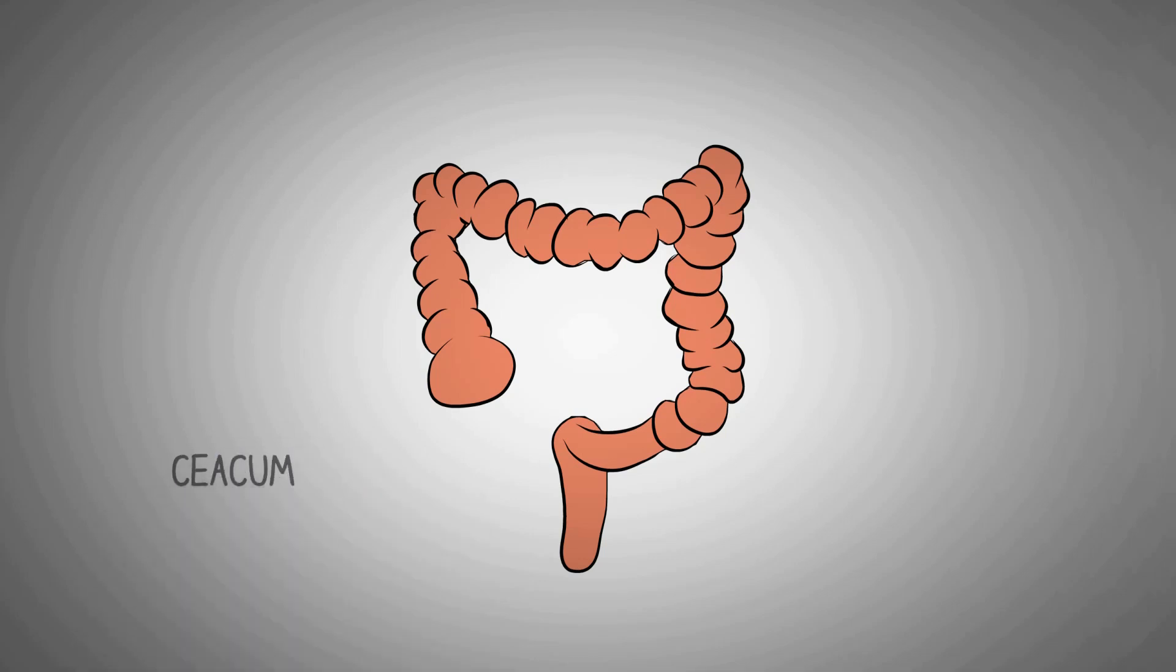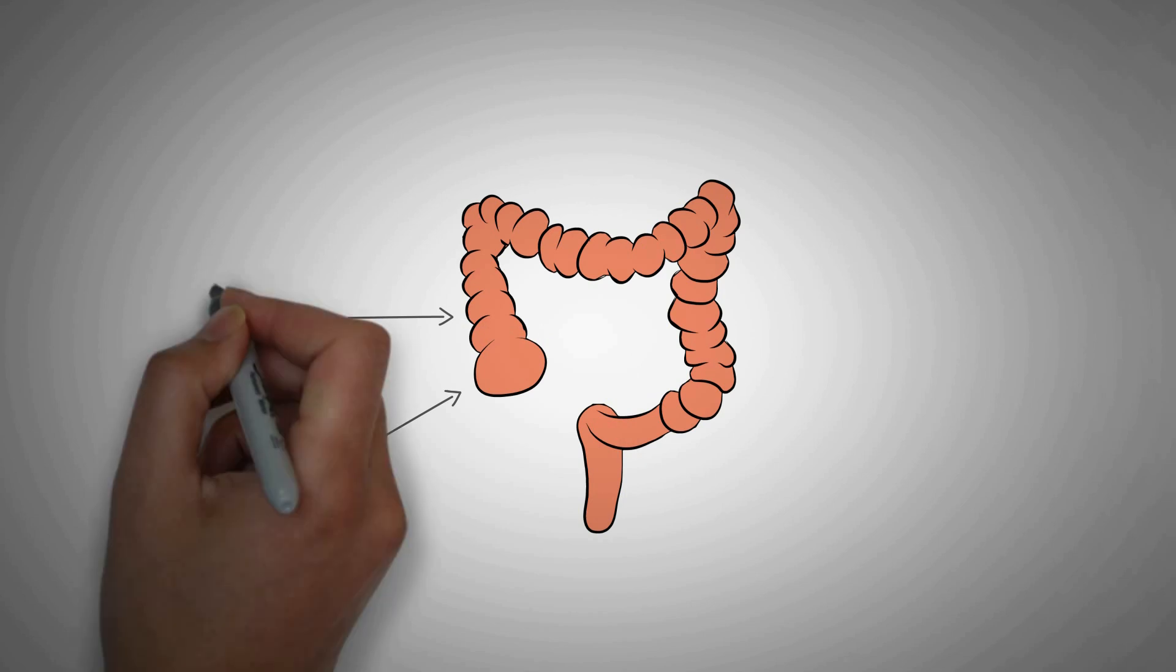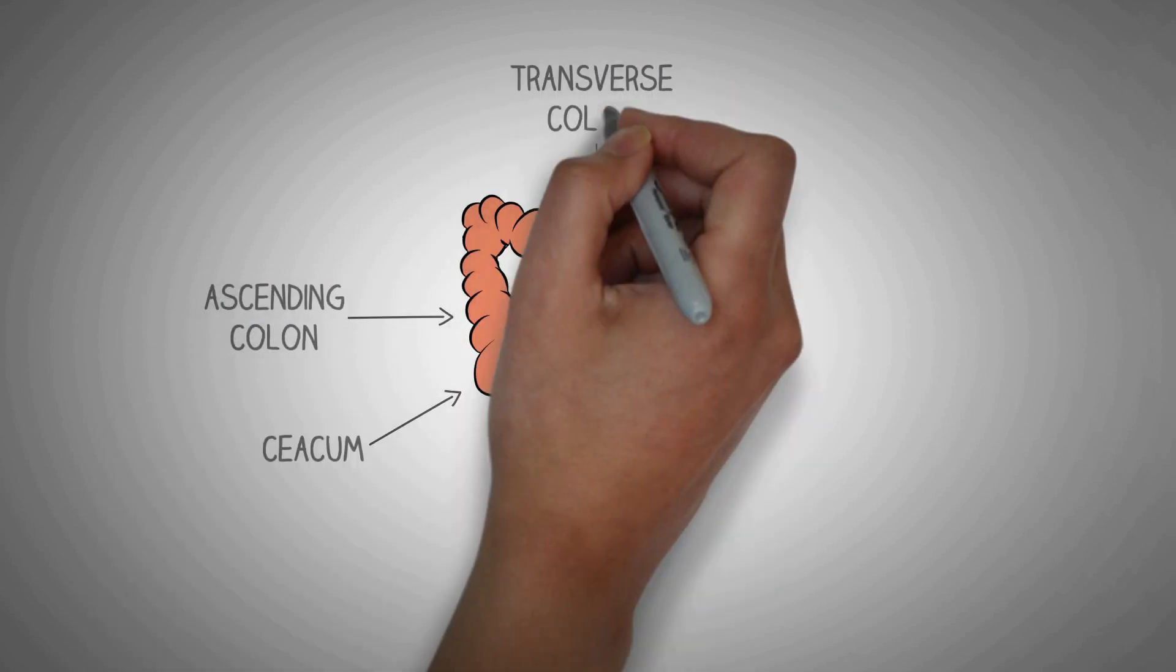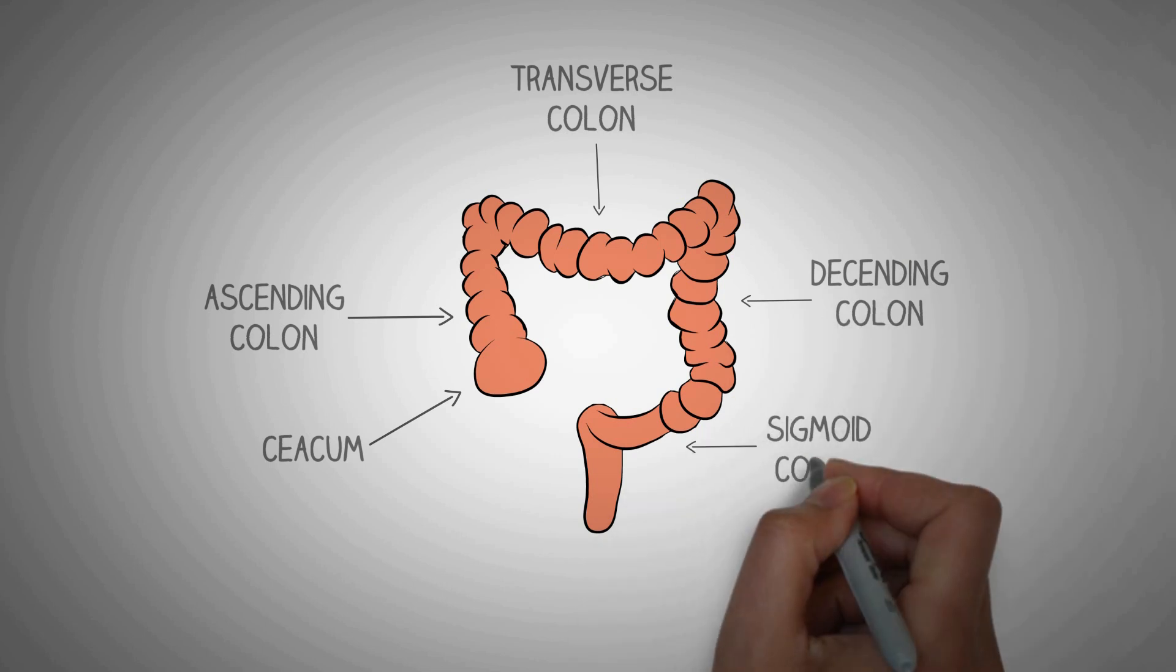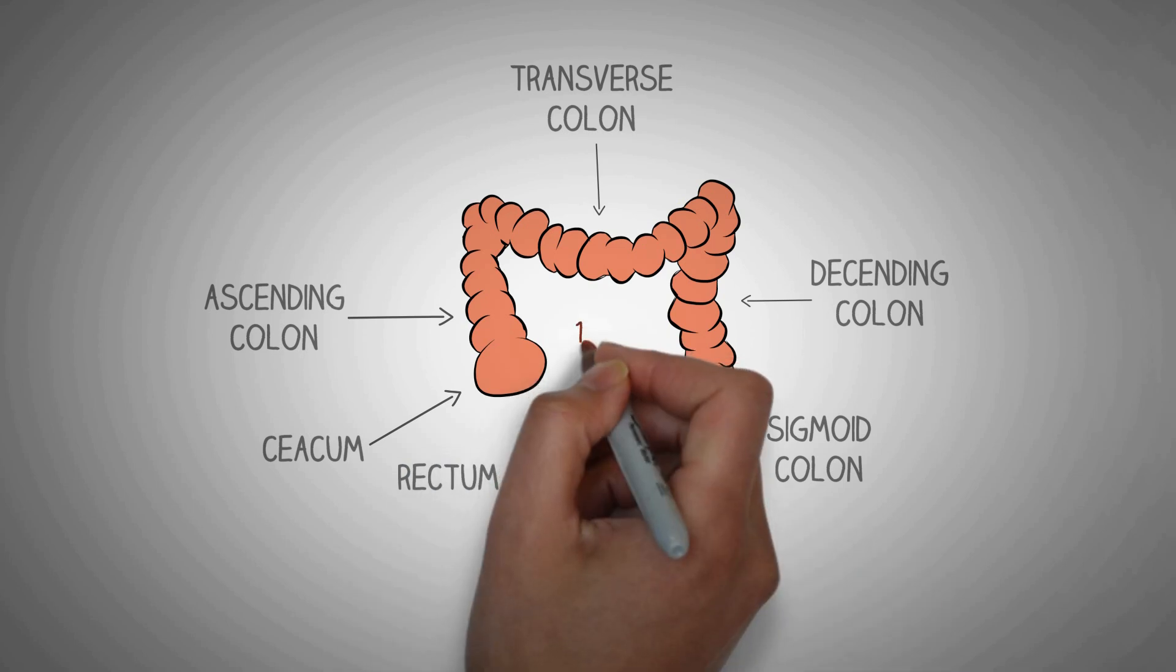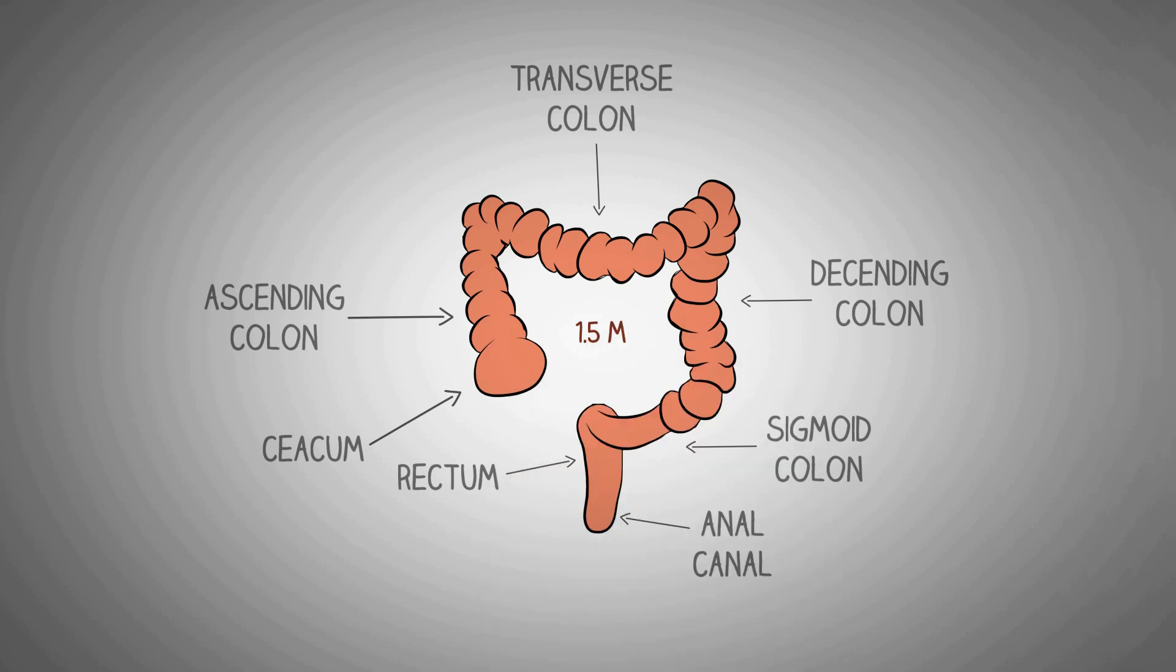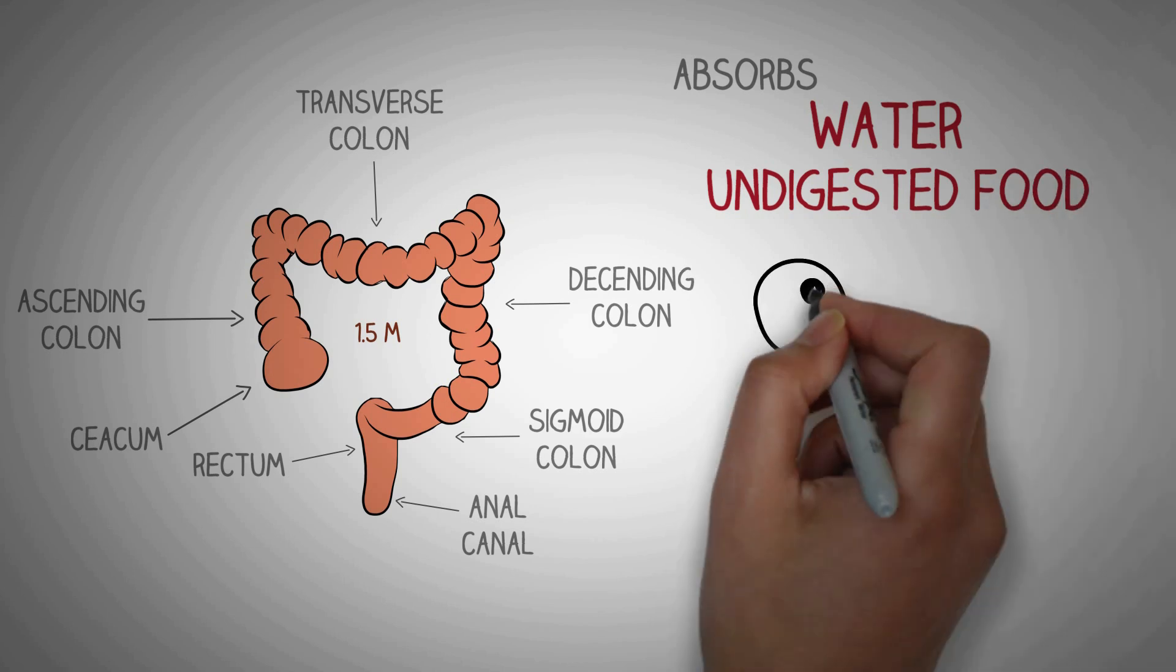The large intestine begins with the cecum which marks the distinction between the small and the large colon. The large intestine is divided into ascending, transverse and descending colon. The descending colon then leads into the sigmoid colon which then leads into the rectum and that finally leads into the anal canal. Overall, the length of the large intestine is about 1.5 meters which is about 1 fifth the length of whole GI tract. The large intestine absorbs water and any remaining absorbable nutrients from the food before sending the indigestible matter to the rectum.